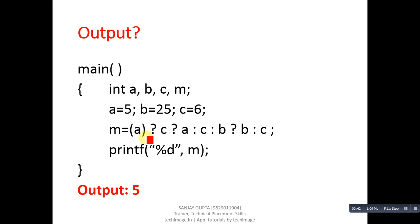This is a conditional statement. Here a will be considered as condition. Value of a is 5, so this block is the true block of this condition and this block is the false block of this condition.